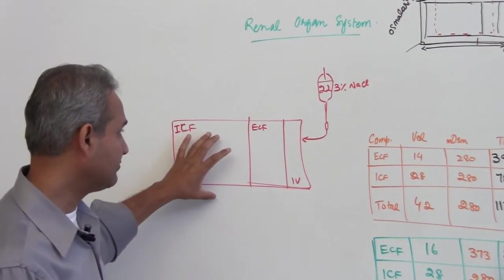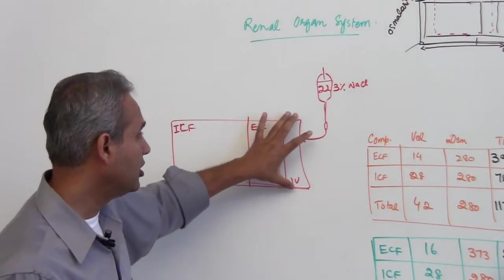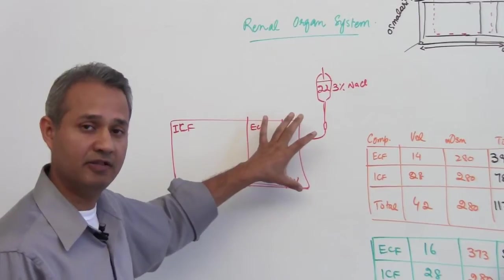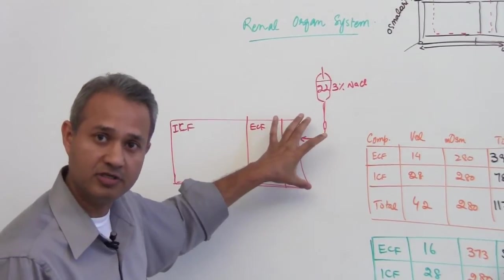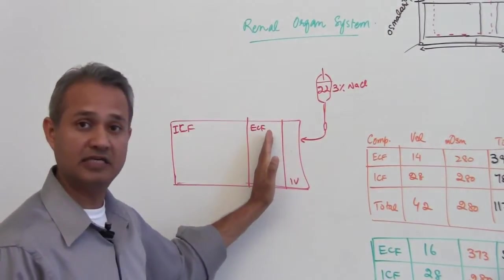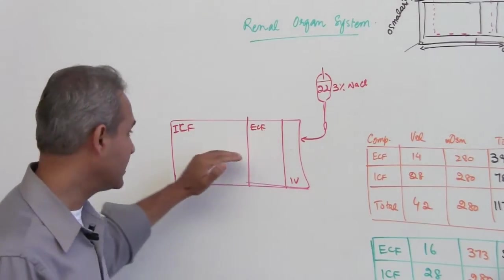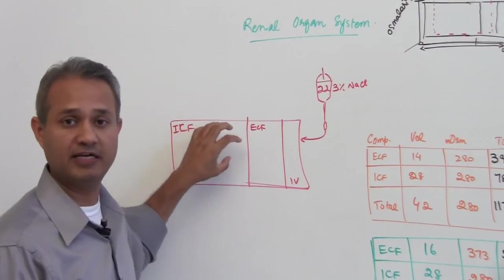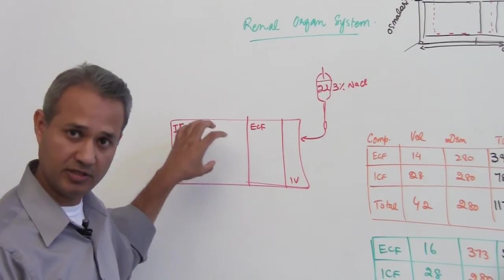So again, I have said it again and again before, most of the time the changes are going to appear in the vascular compartment first, then they appear in the interstitial compartment, and then if at all there is osmolarity changes, they would be reflected back in the ECF as well.